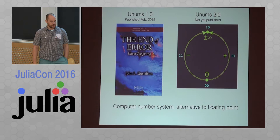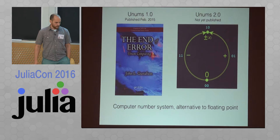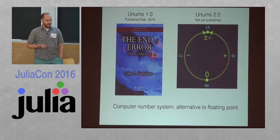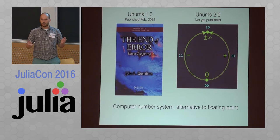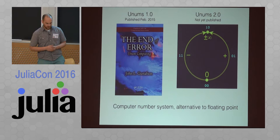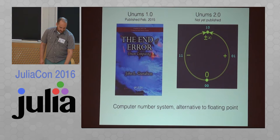Unums 2.0 is a very new idea — I think it's not yet published. John Gustafson just started presenting about it a couple of months ago. I have a little anxiety presenting about it because it's someone else's idea under active development. But one of the cool things about Julia is that it makes it easy to experiment with this kind of idea — Julia is letting me live on the cutting edge. It may be too early to draw final conclusions about what unums 2.0 is.